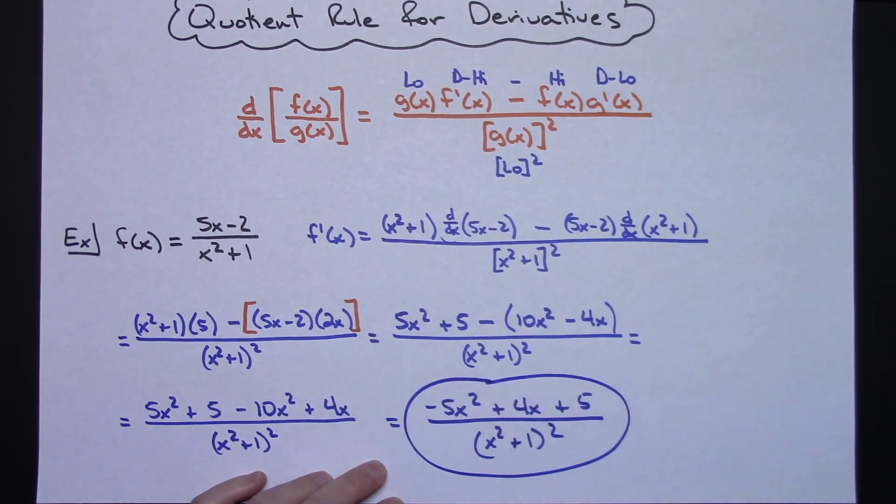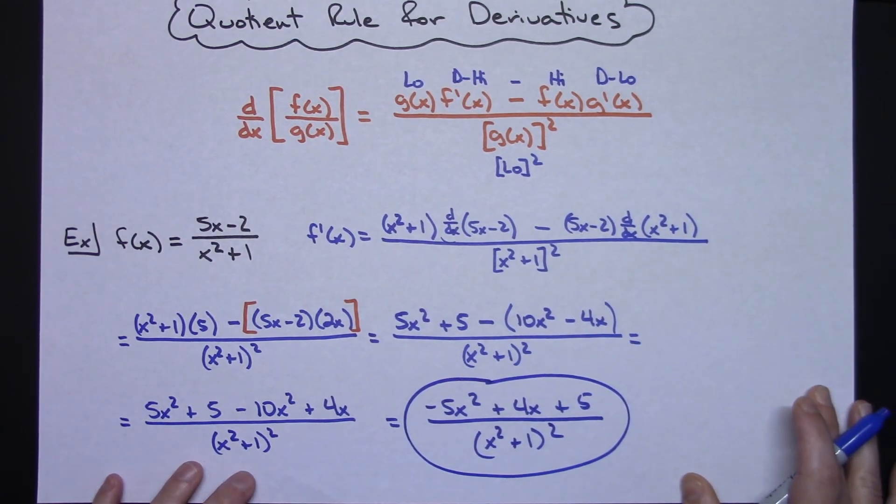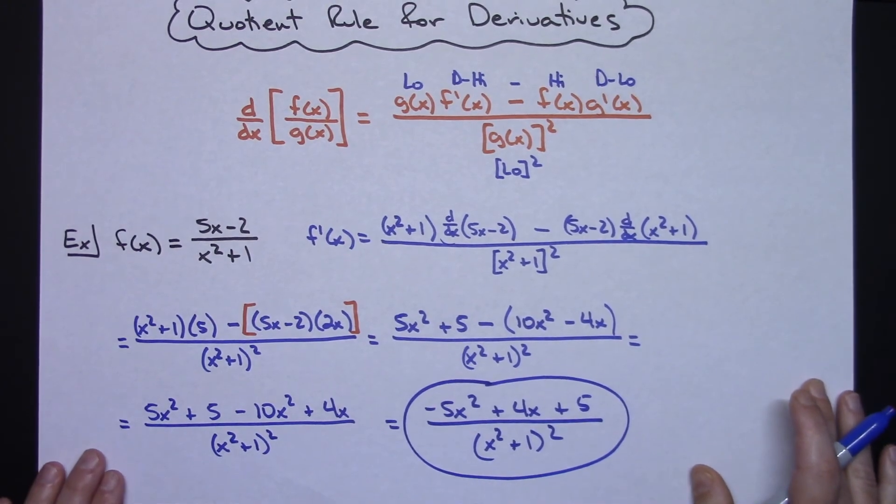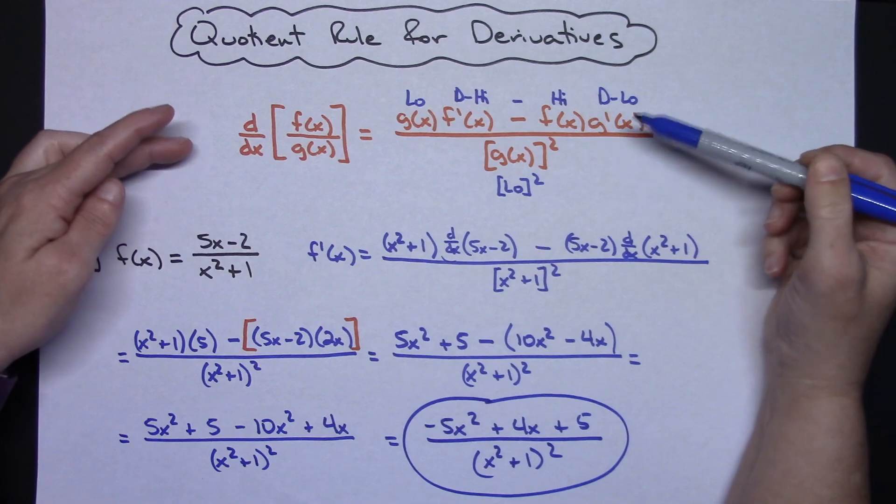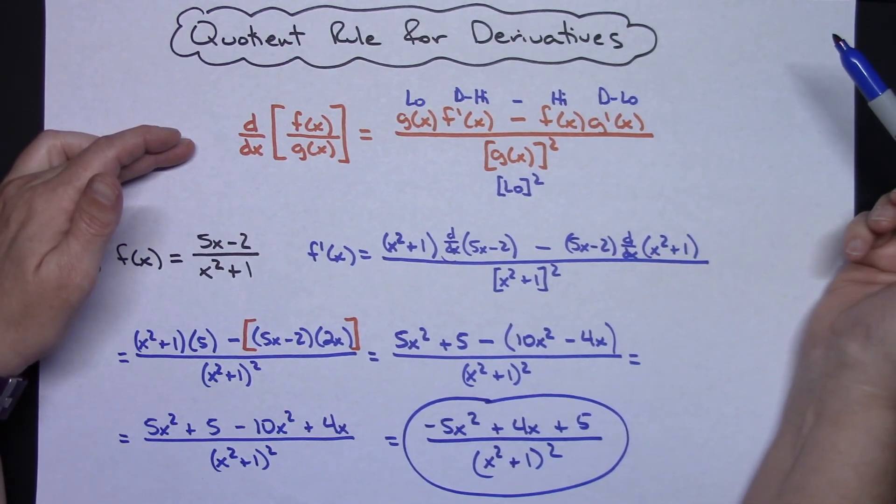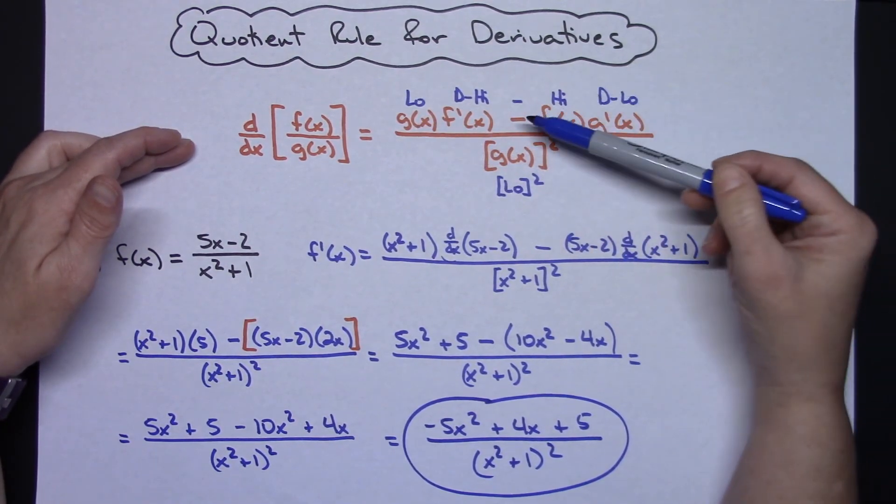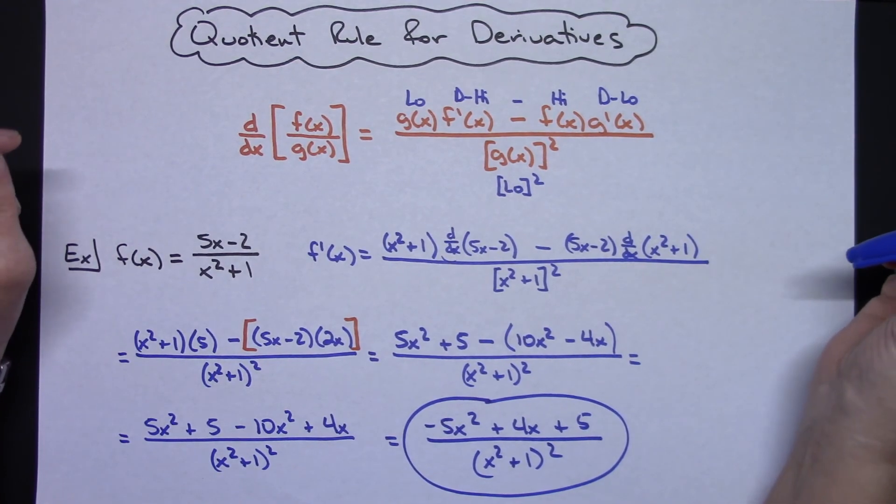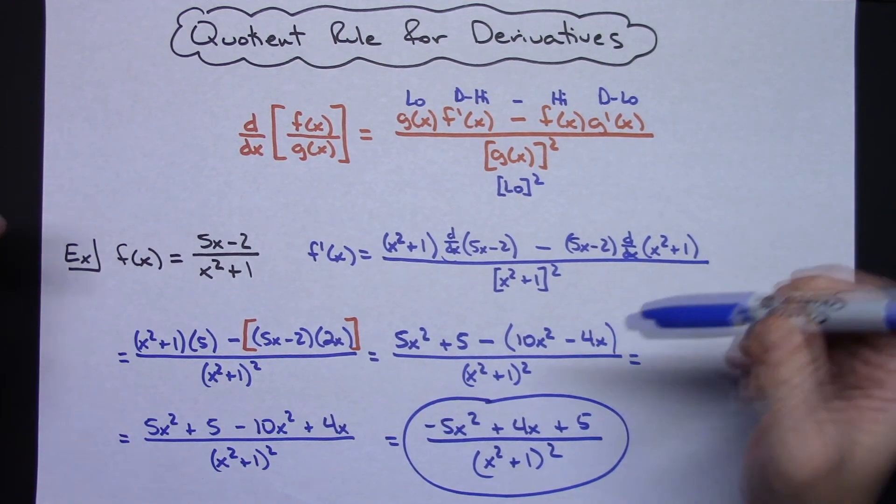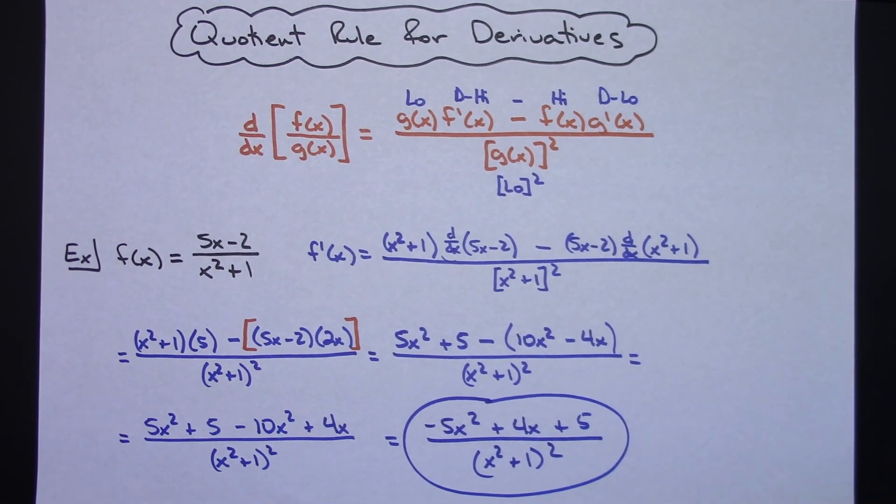Alright, so in this video I just wanted to do one straightforward example of the quotient rule for derivatives. Alright, and give you that little mnemonic for memorizing the quotient rule: low d high minus high d low all over low squared. I think that makes it really simple. Definitely thanks for watching and be sure and subscribe to the channel. Thanks.